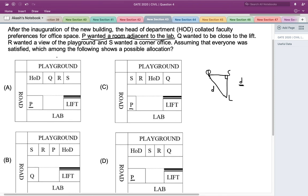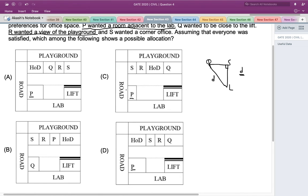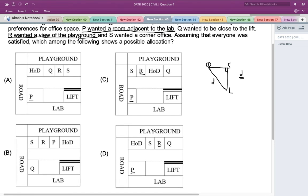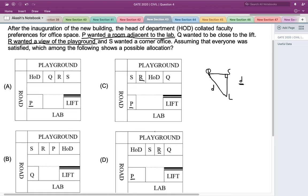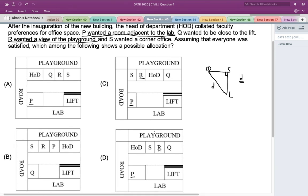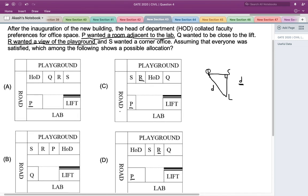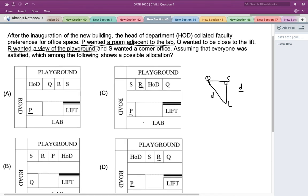Now let's look at the condition: R wanted a view of the playground. If I look at this condition, both options C and D are satisfied because in both options, R has a room which has a view of the playground. Nowhere is anything additional mentioned. In both options, this condition is satisfied. Now let's look at the last condition.